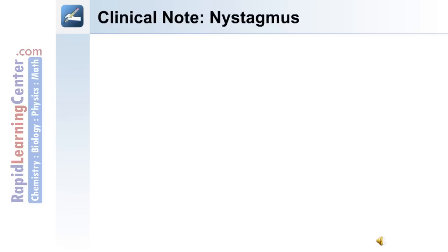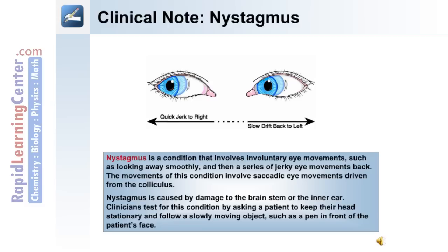A clinical note on nystagmus: this is a condition involving involuntary eye movements, such as smooth movement away followed by a series of jerky movements back. The movements involve saccadic eye movements driven from the colliculus. Nystagmus is caused by damage to the brain stem or the inner ear. Clinicians test for this by asking a patient to keep their head stationary and follow a moving object, such as a pen held in front of the patient's face.